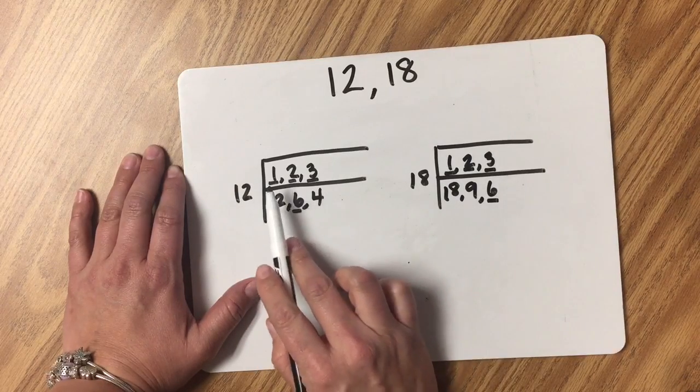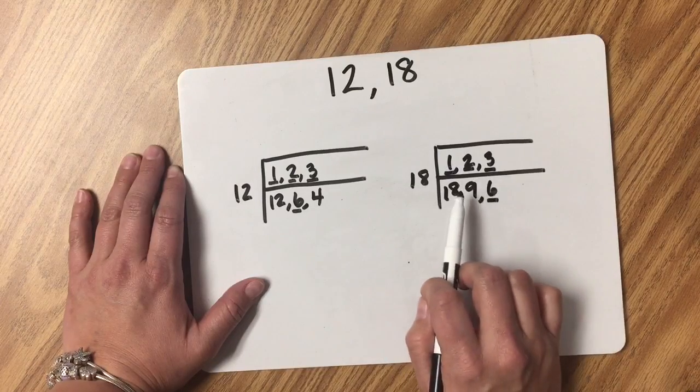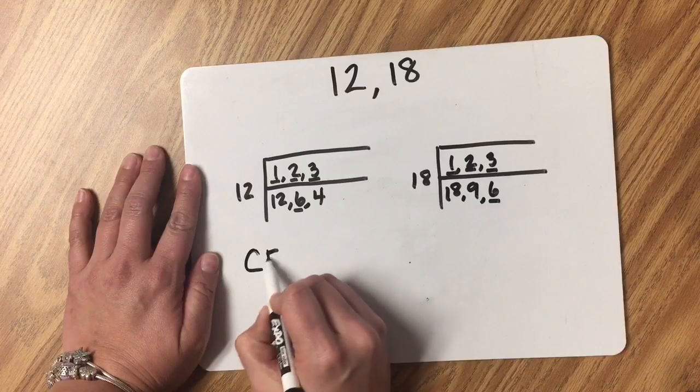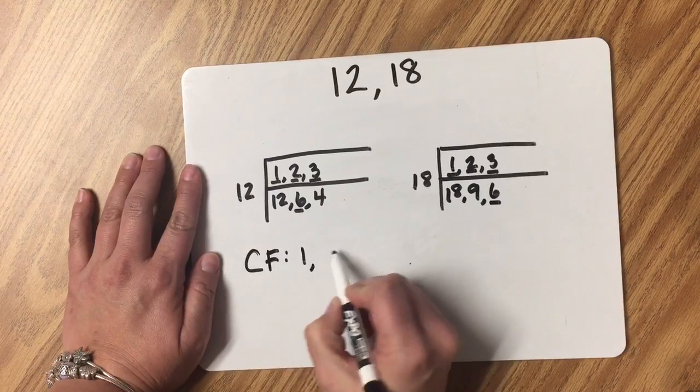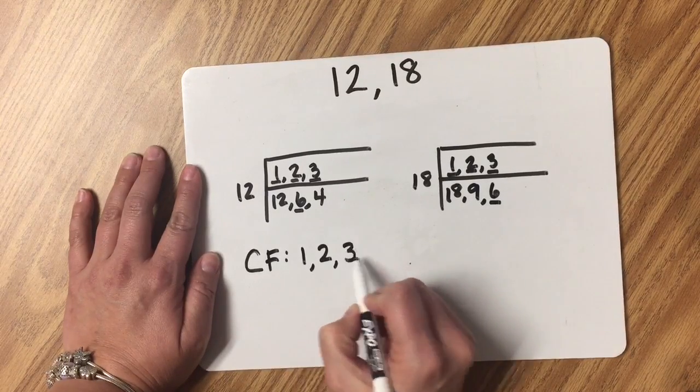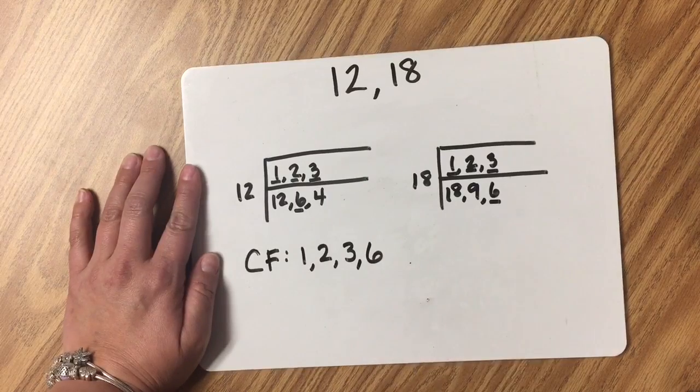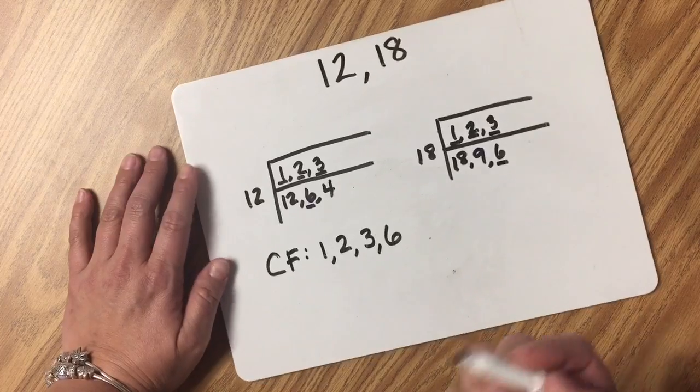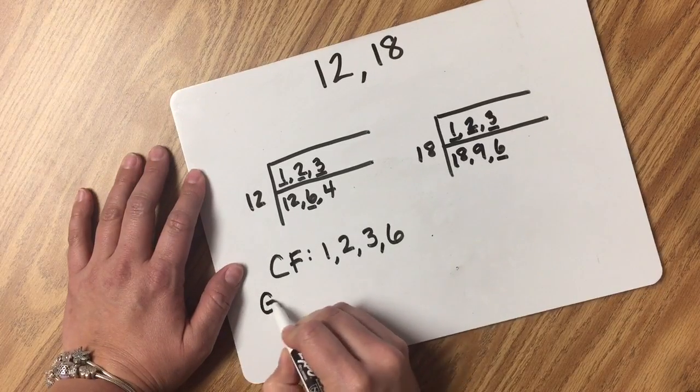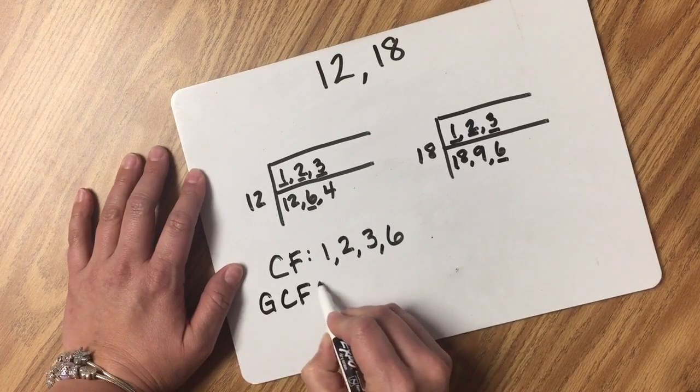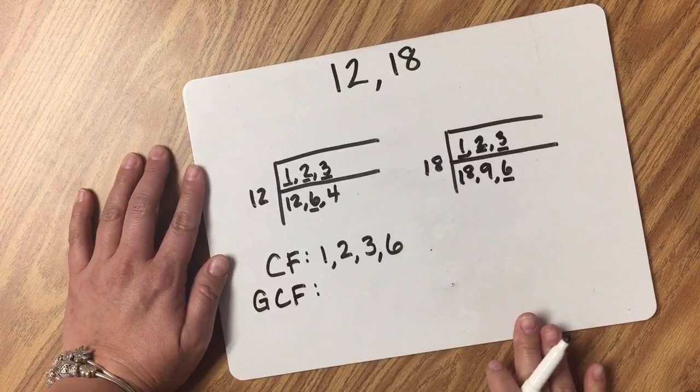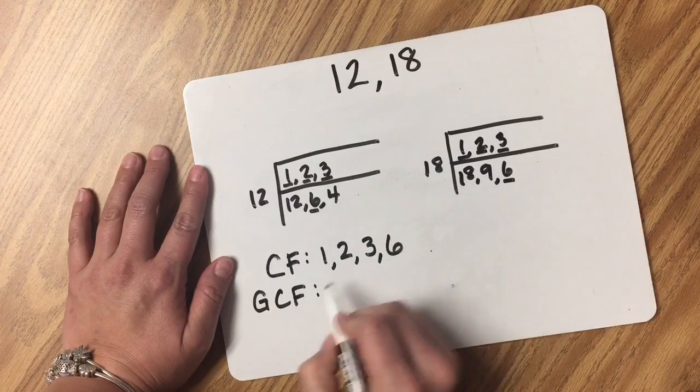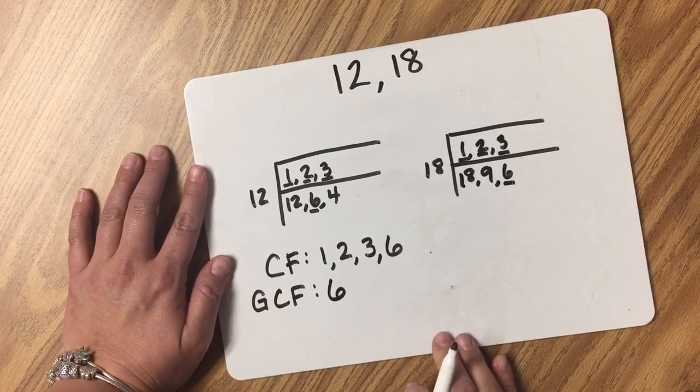So as of right now, I see 4 common factors between 12 and 18. 1, 2, 3, and 6. I want to know or determine what the greatest common factor is. That simply means which is the largest factor that they have in common, and that is the 6.